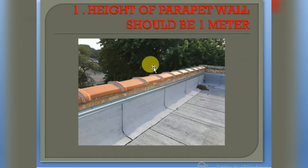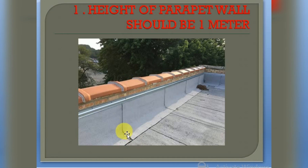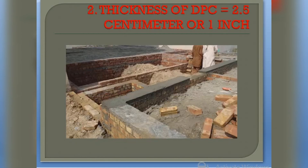As shown in this picture, this is the parapet wall. The height from this point to this point should be 1 meter. So the height of parapet wall should be 1 meter. Our next point is the thickness of DPC, which is equal to 2.5 centimeters or 1 inch.